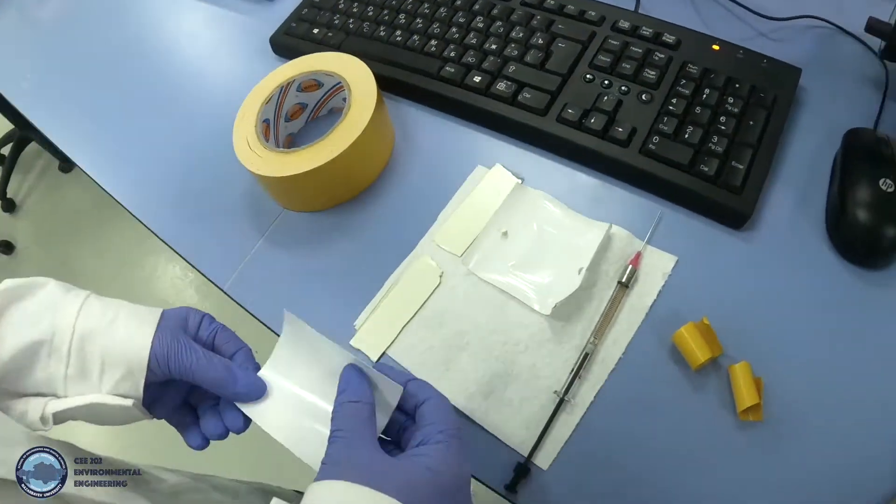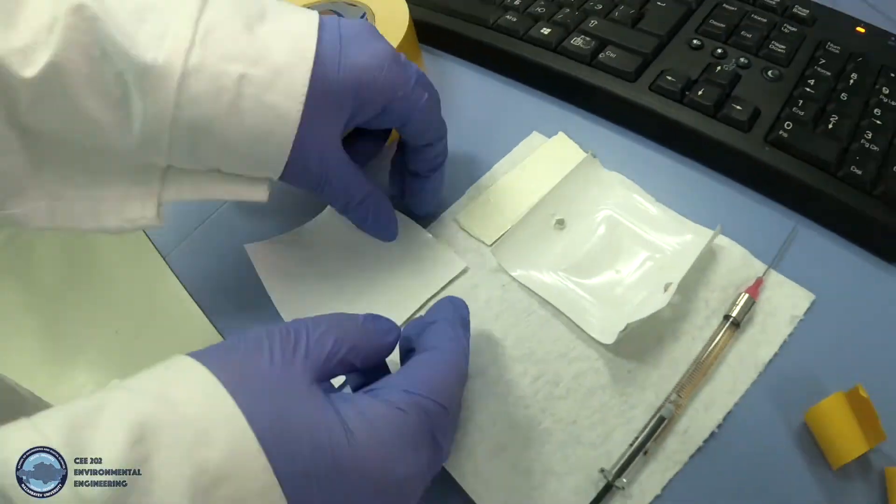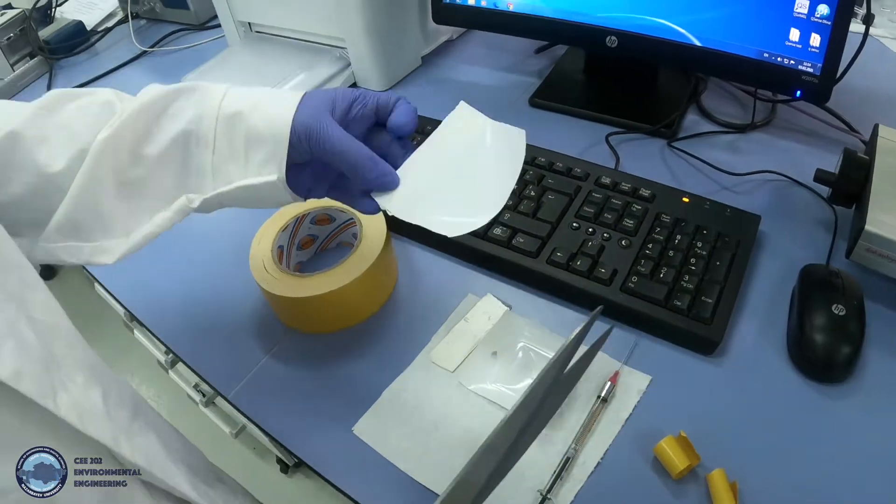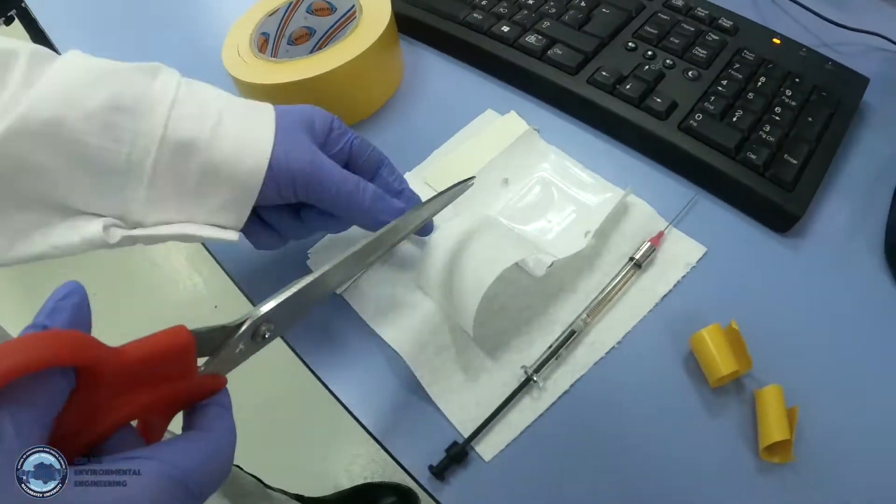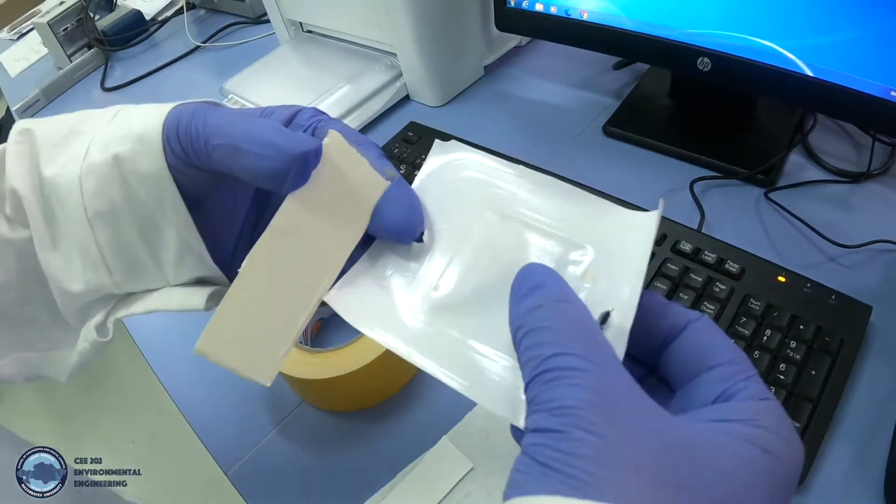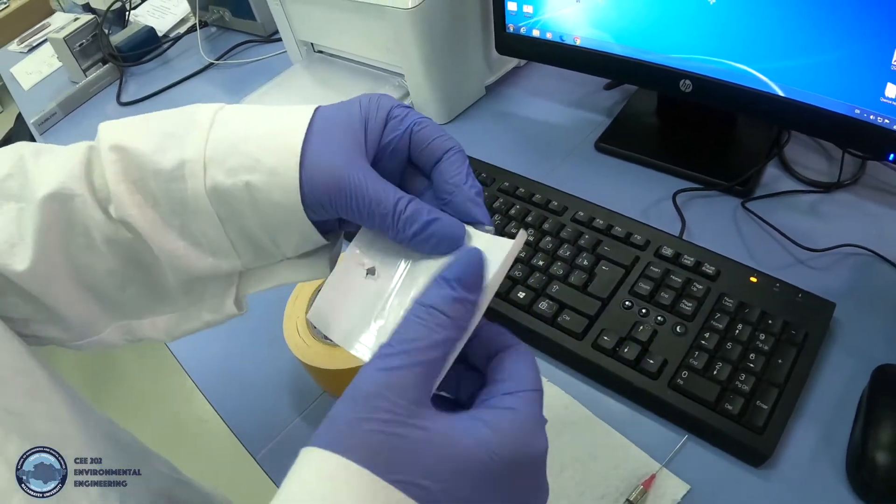We will place virgin PES membrane on the first glass plate with the tape and cut around that glass plate. Now we will repeat the same procedure with fouled membrane.